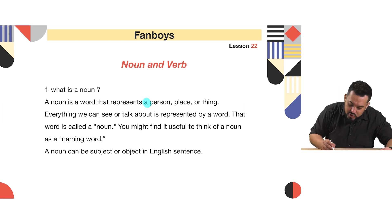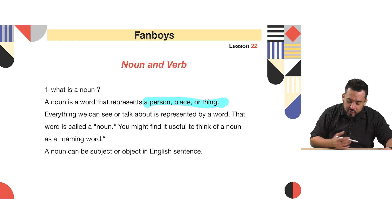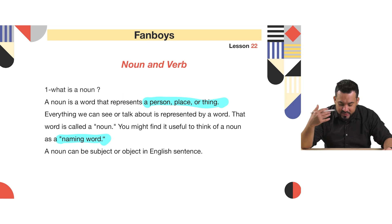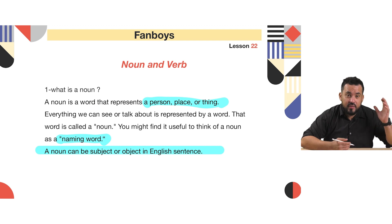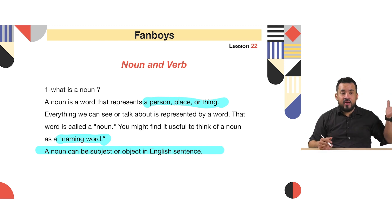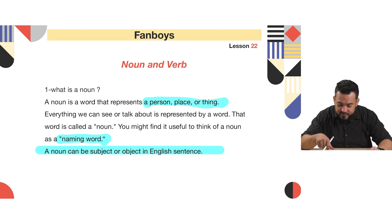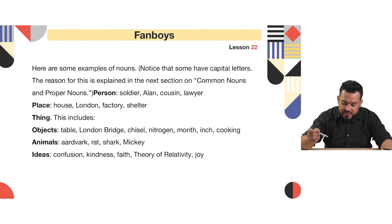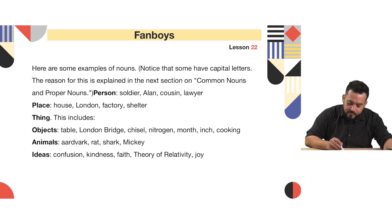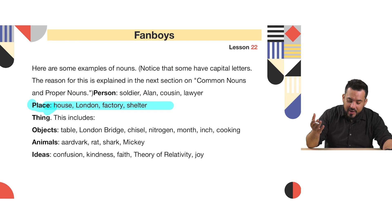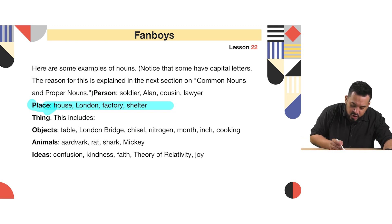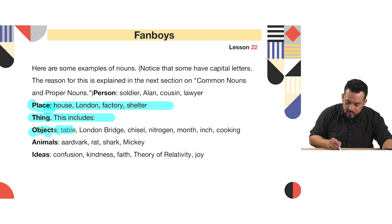A noun is a word that represents a person, a place, or a thing — that is called a noun. It could be a name, a country, or a city. A noun can be the subject or the object in a sentence. Here are some example nouns: place, house, city, factory, shelter, London. It could be a thing — objects like table, London Bridge.